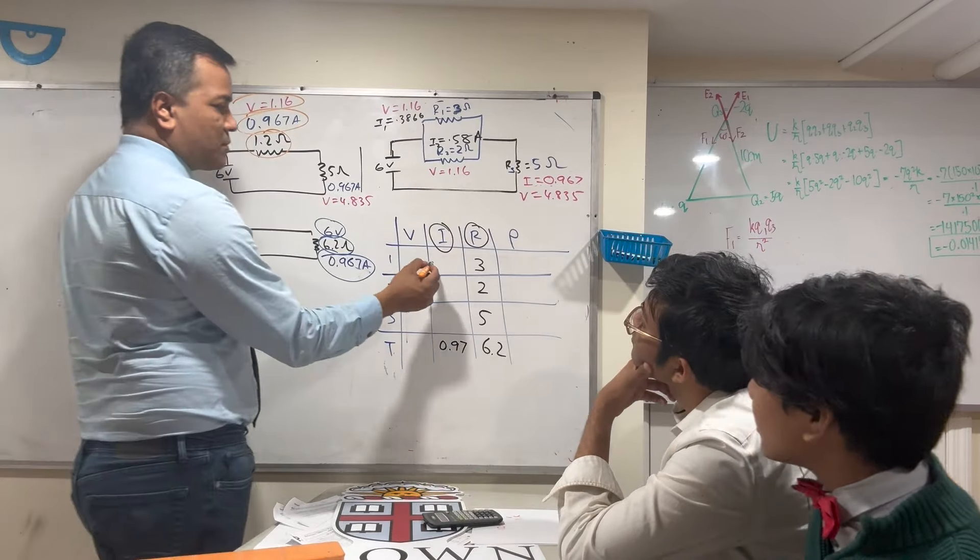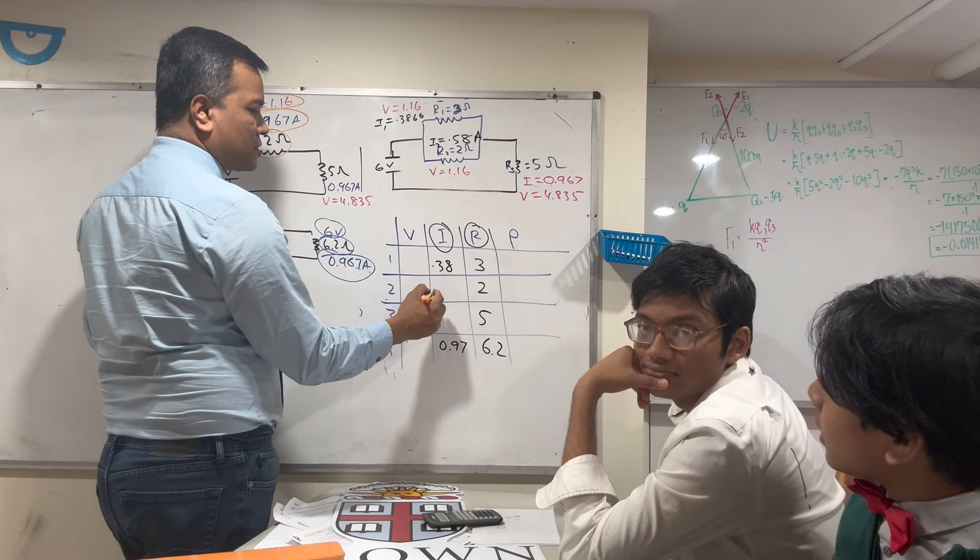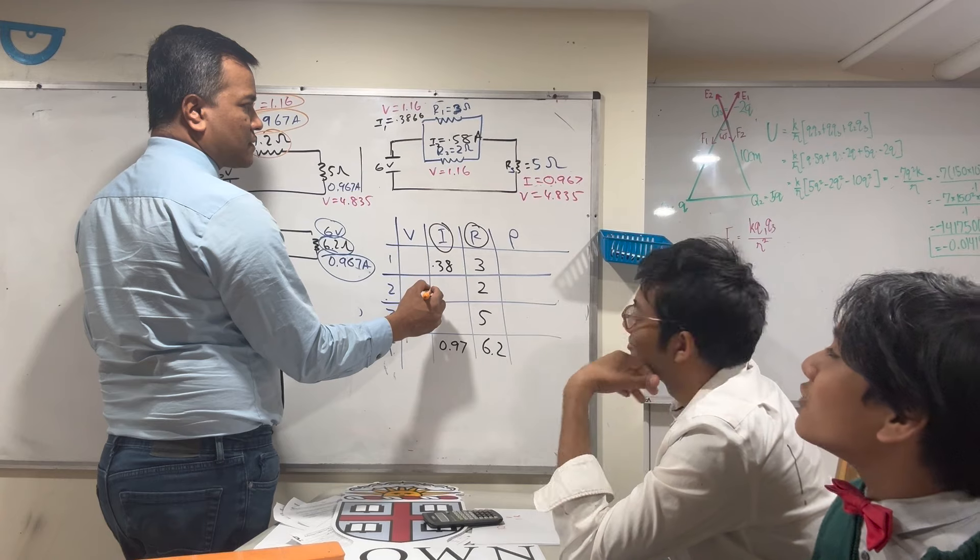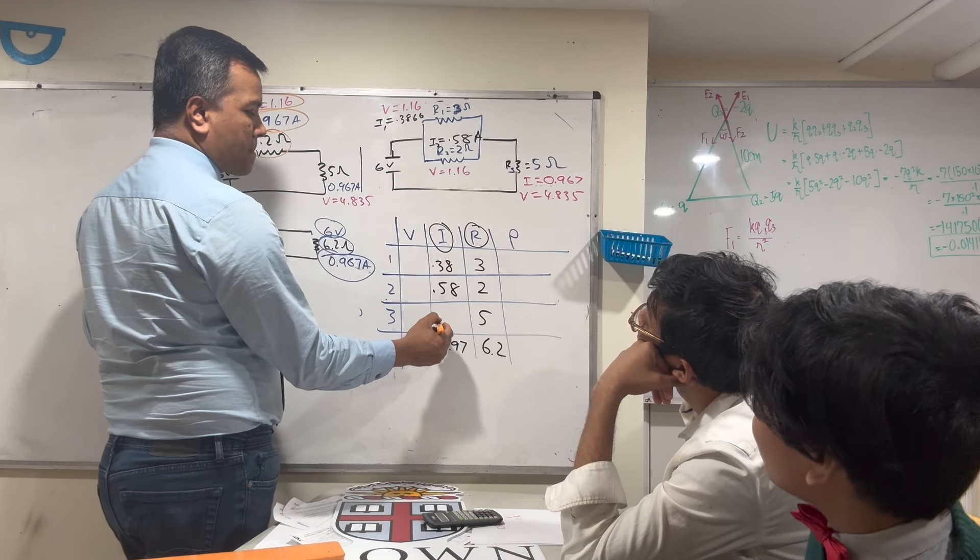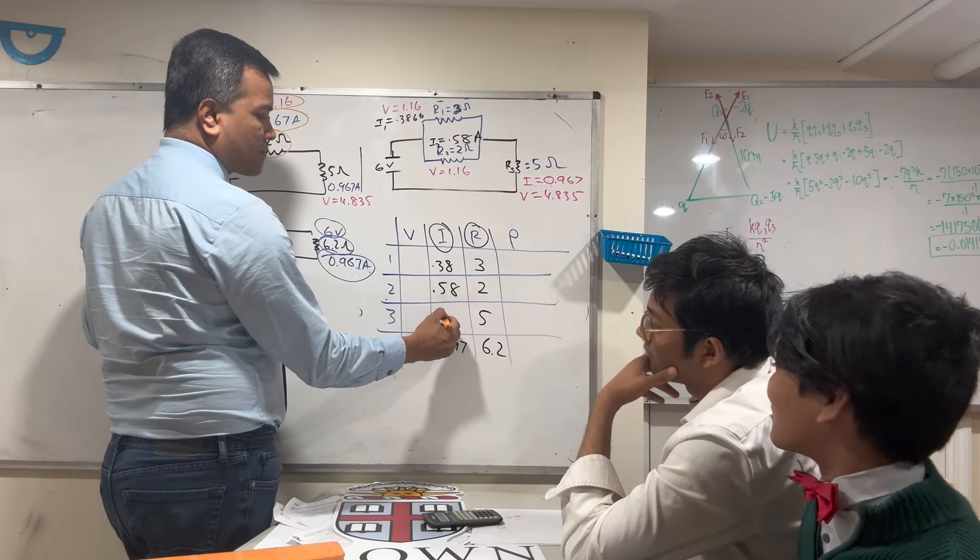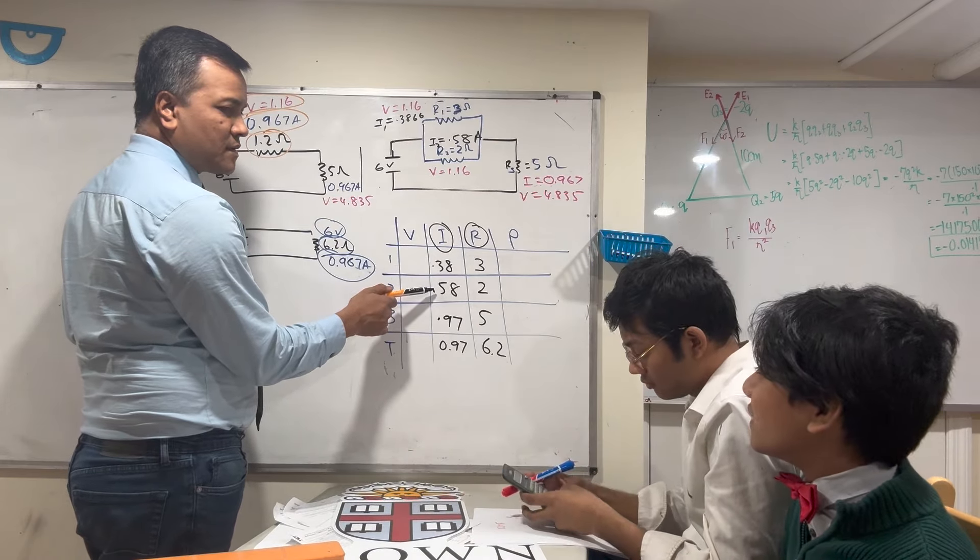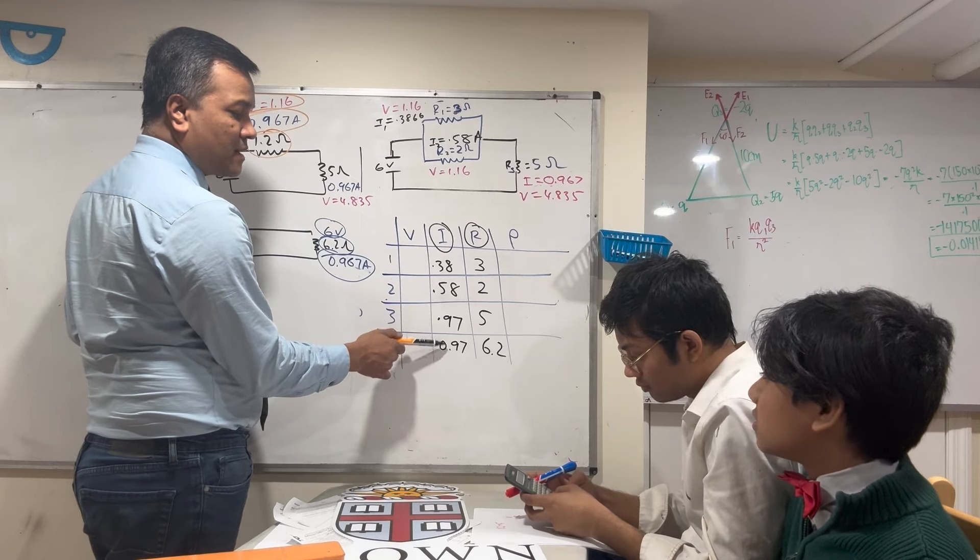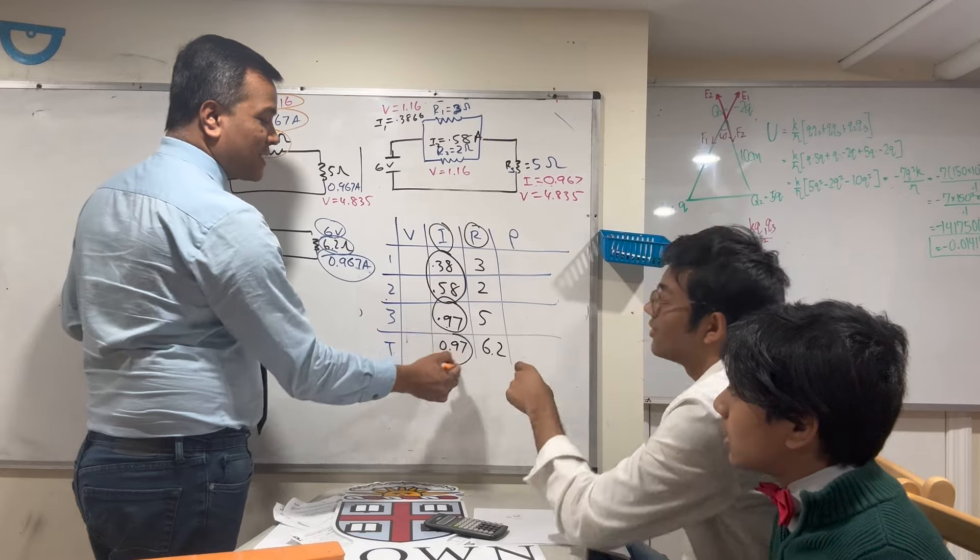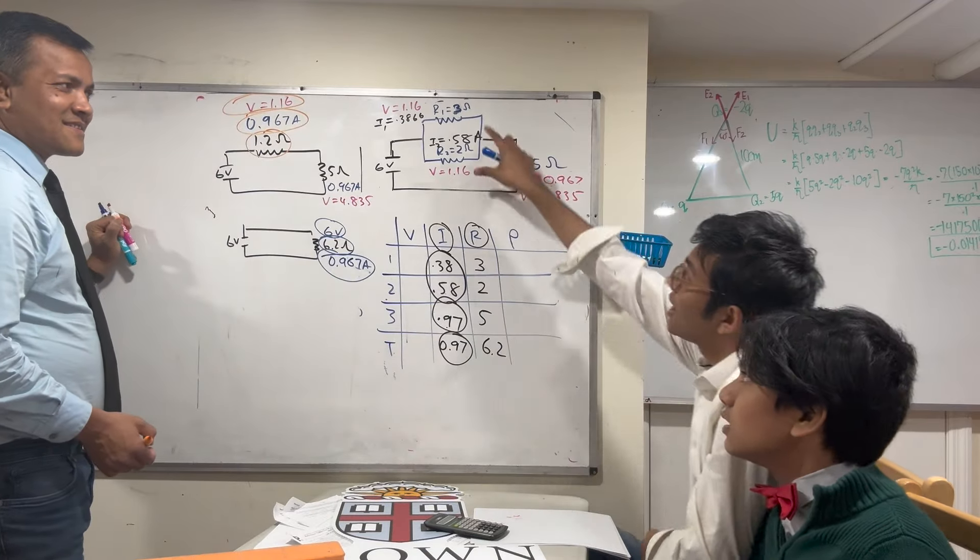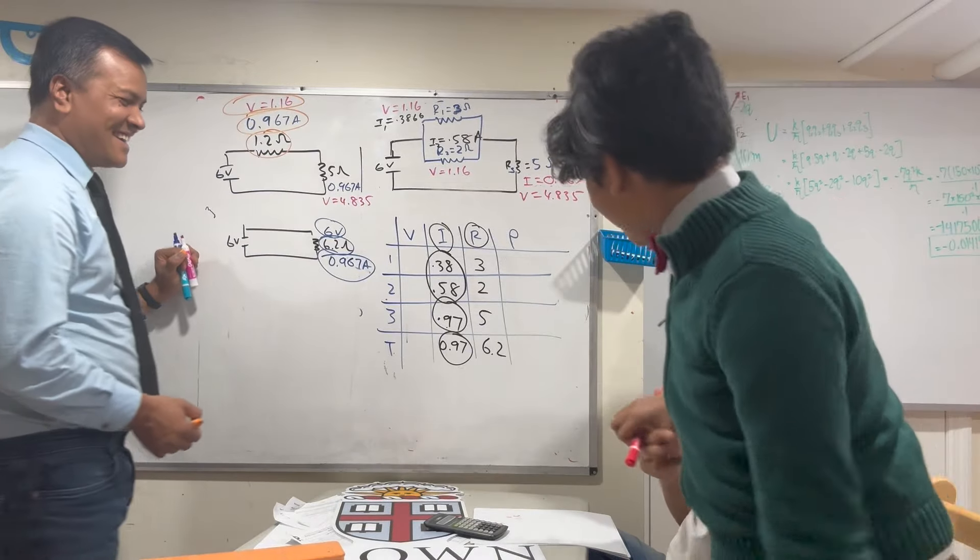Current. Isaac, how much is the current? For R1, it's 0.3866. R2 is 0.58. R3 is 0.967. Let me see, Isaac, 0.38 plus 0.58 is how much? I can't count. It's 0.96. I said 0.97 because when you combine the two in circuit addition. Oh, I thought you meant literal addition. No, circuit addition.